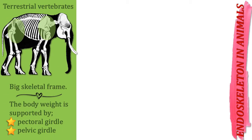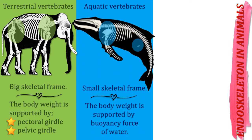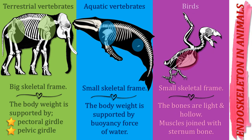Terrestrial vertebrates have a big skeletal frame — just look at an elephant. The body weight is supported by the strong pectoral girdle and pelvic girdle, both joined with the legs. The pectoral girdle is also known as the shoulder girdle. Aquatic vertebrates have a small skeletal frame; the pectoral and pelvic girdles are small and weak, but body weight is supported by the buoyancy force of water, which is why a whale can grow larger than its skeleton size. Birds also have a small skeletal frame with light, hollow bones, and muscles joined to a flat, wide sternum adapted for flying.